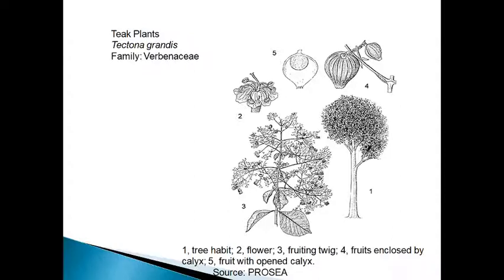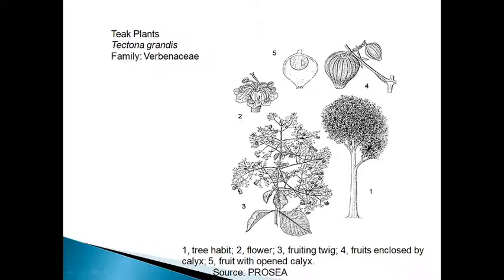This plant belongs to the family Verbenaceae. In this picture, image number one shows the tree habit. Already I mentioned that this is a deciduous tree. Number two shows the flower and fruit-bearing twig, number four shows fruits enclosed by calyx, and number five shows fruits with open seeds. This illustration explains the overall morphology of Tectona grandis.